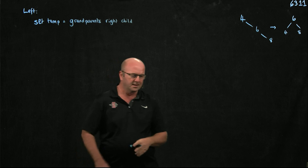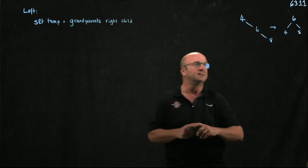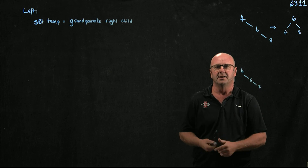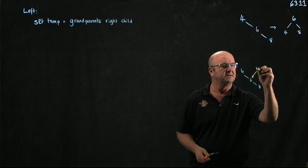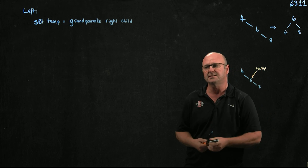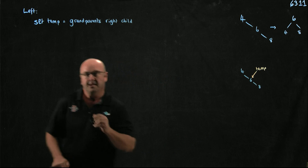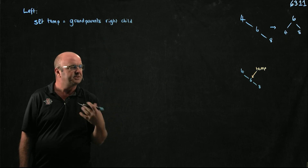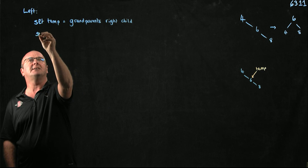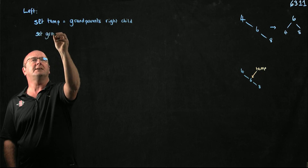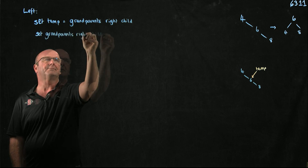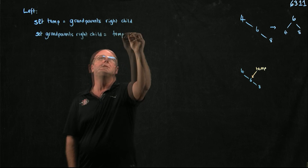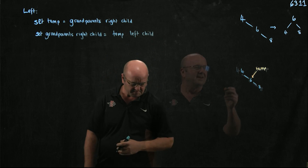So in this case, here's our tree: 4, 6, and 8. We set a temporary pointer that points to the 6. Now that we've done that, we can use the grandparent's right child to do something else with it — we set the grandparent's right child equal to the temporary pointer's left child.